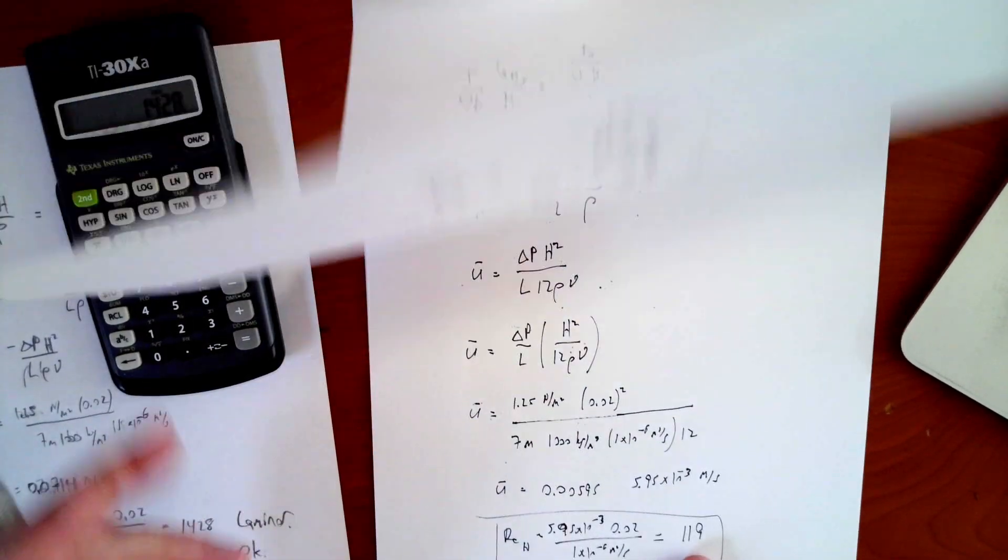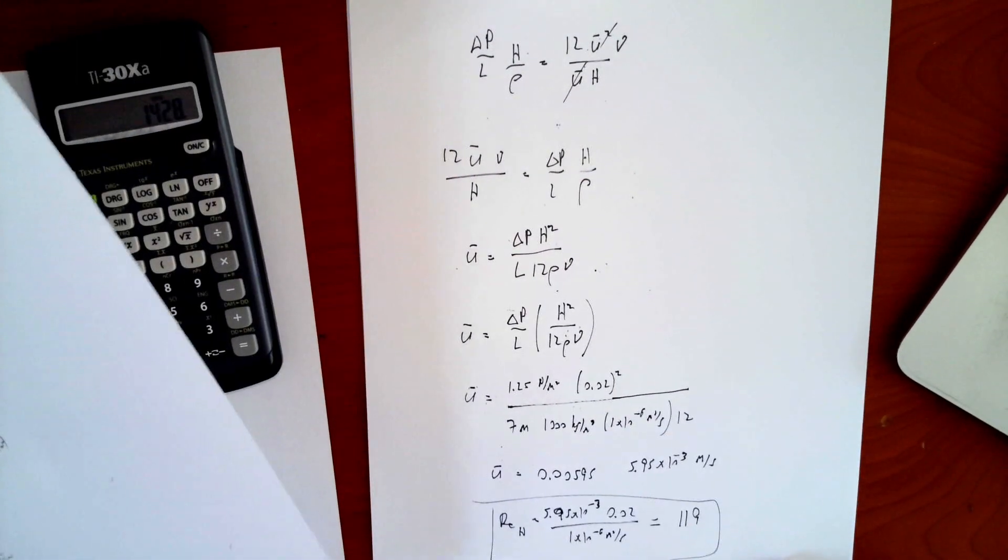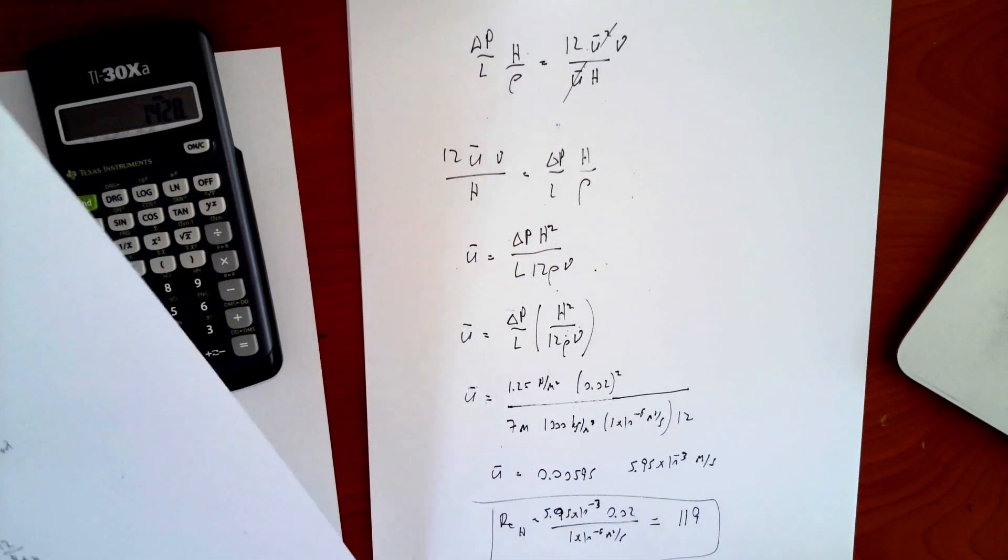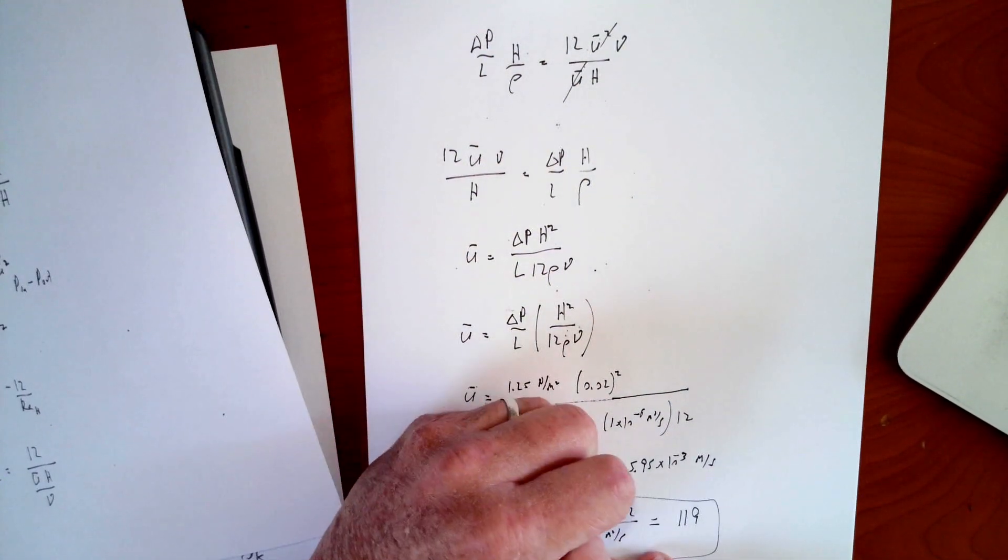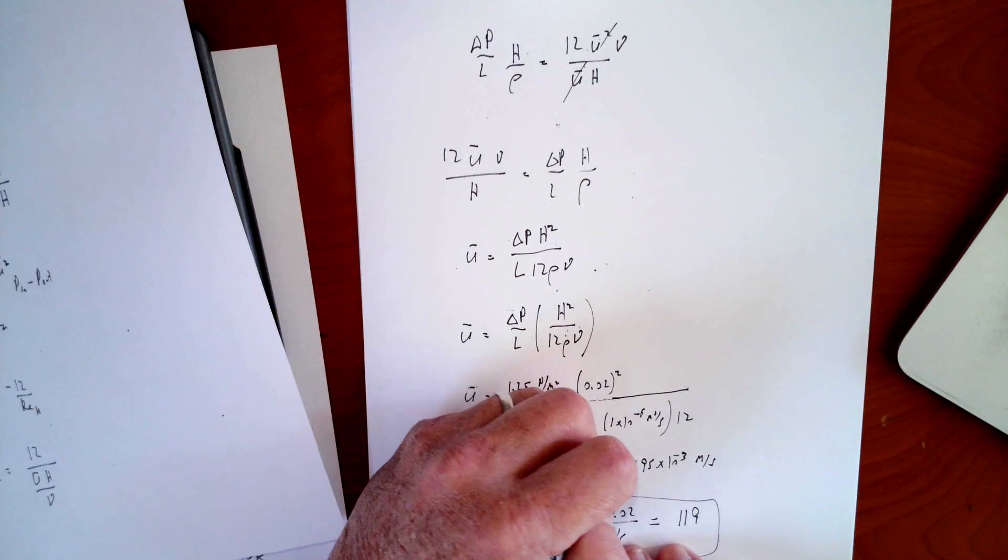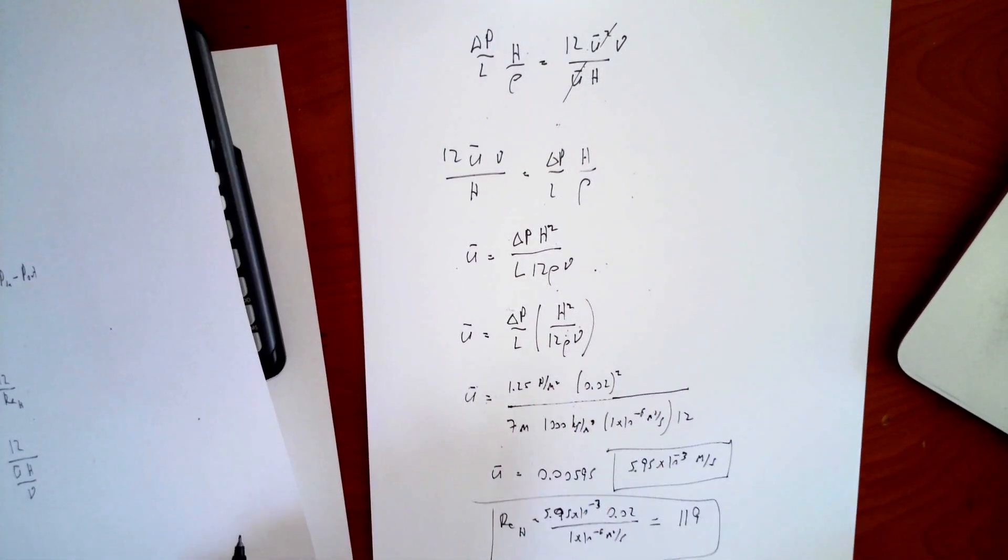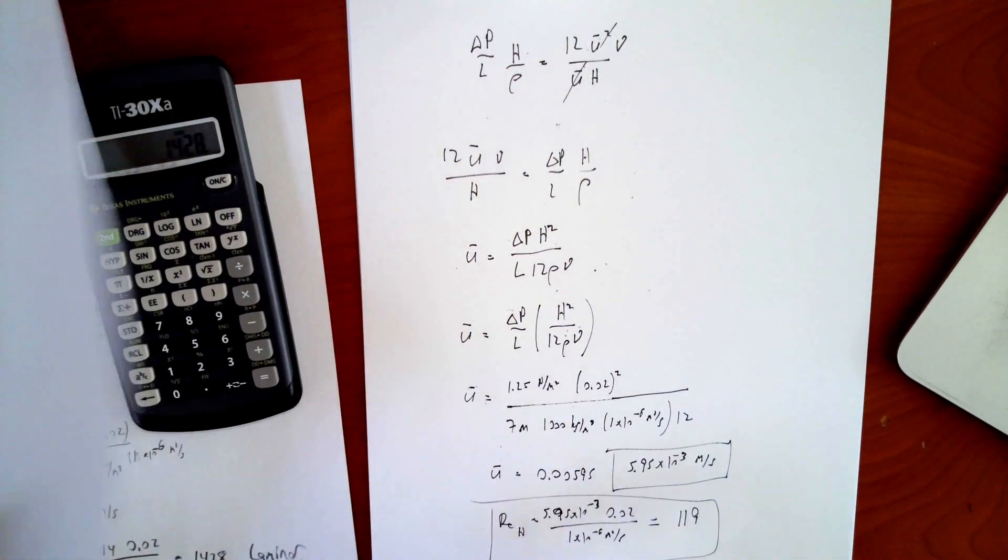That's just a check to make sure that I'm not crazy using laminar flow theory. But happily, I designed the problem well enough. And this is laminar. So we found our average flow velocity. It's right here, 5.95 times 10 to the minus three meters per second. Next time we'll look at part B.